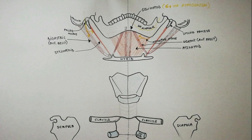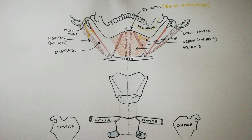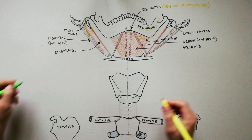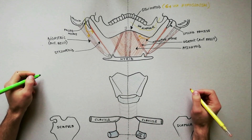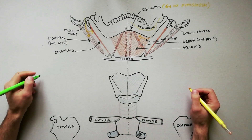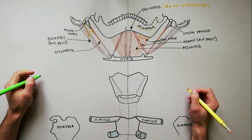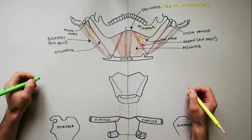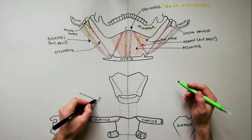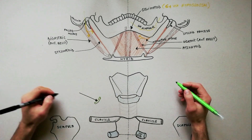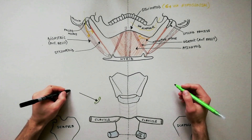Using the green color, we will start indicating the following four paired infrahyoid muscles. First to be indicated is the omohyoid muscle. This muscle consists of two bellies separated by an intermediate tendon.